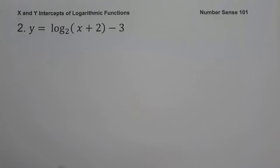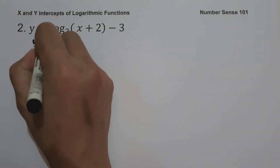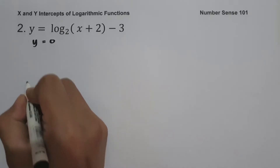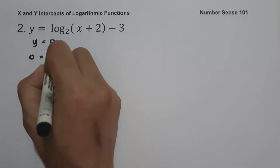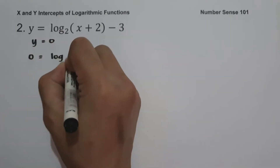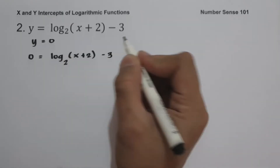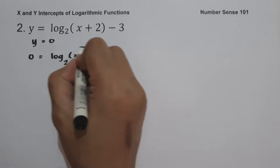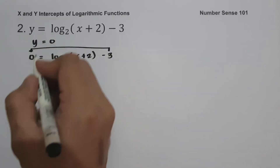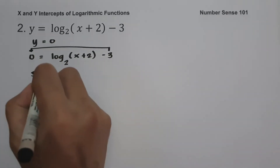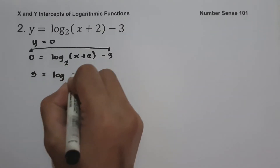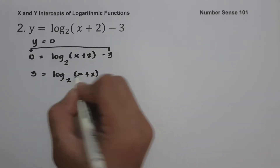On example number 2: y equals log(x + 2) base 2 minus 3. To find the value of the x-intercept, let us set y equal to 0. So we have 0 equals log(x + 2) base 2 minus 3. Let us move negative 3 to the side of 0, which gives us 3 equals log(x + 2) base 2.